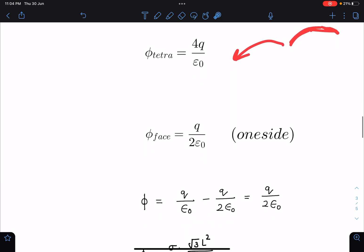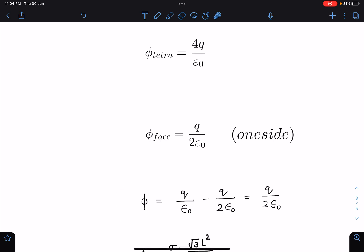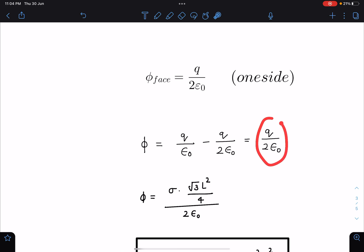So other side only we have to calculate. So this will become q by 2 epsilon naught which is corresponding to 2 pi steradian solid angle. So now phi value is known to us, q by epsilon minus q by 2 epsilon naught. So let us substitute the value of q.